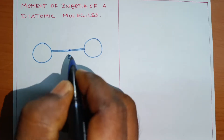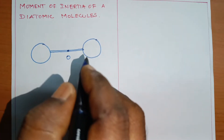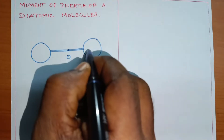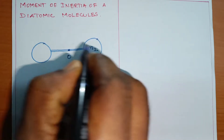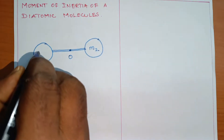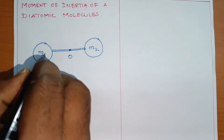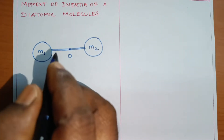Let us consider the center of mass O. This is M2 and this is M1.